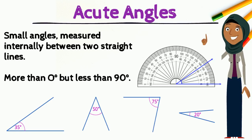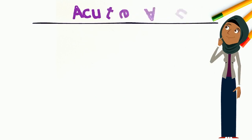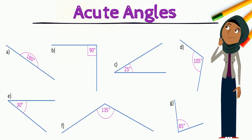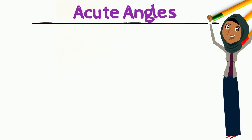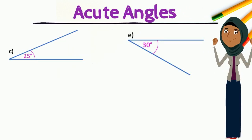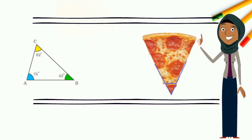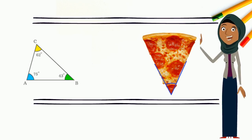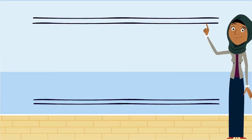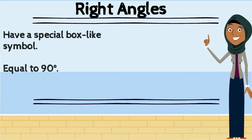Here are some examples of acute angles. Now I want you to pause this video and see if you can find the acute angles here. Well done — you found them! Here are the acute angles. Some triangles have acute angles just like this one. The slice of pizza that you eat for lunch is also an acute angle.